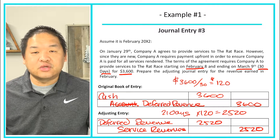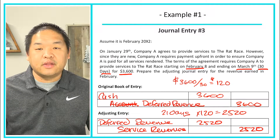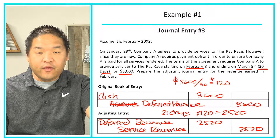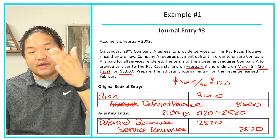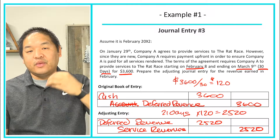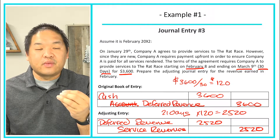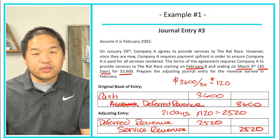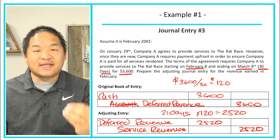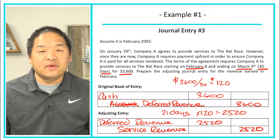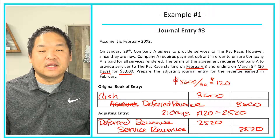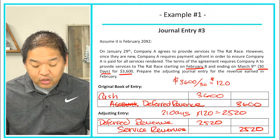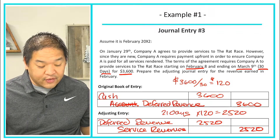That's what journal entry three looks like. The cash payment was made before the service period, we deferred it, and now we've earned some of that deferred revenue. So we book the revenue and extinguish the portion of the liability we owe to the customer.